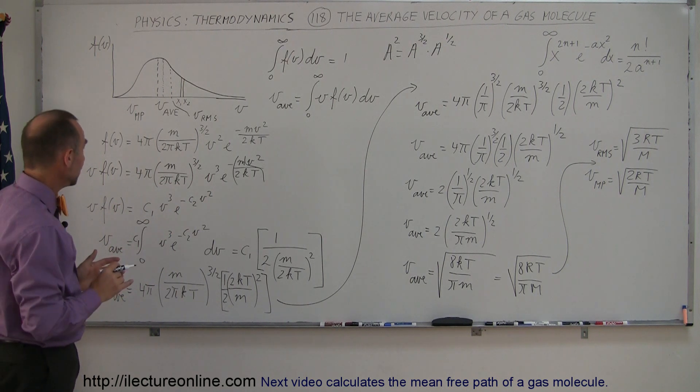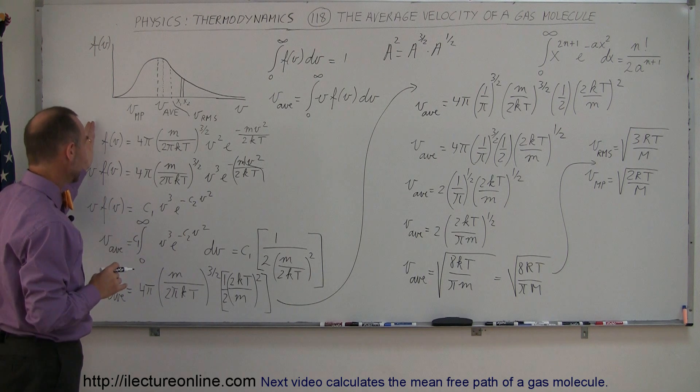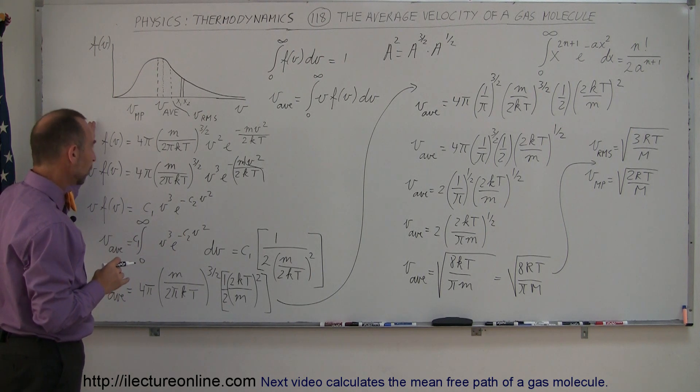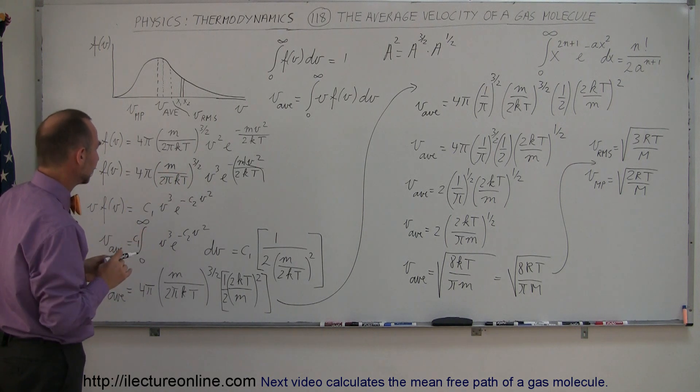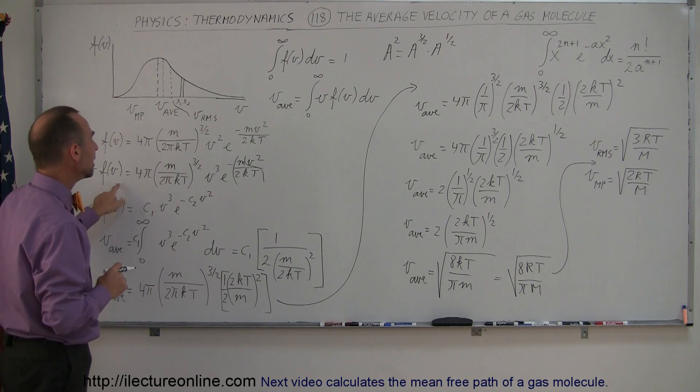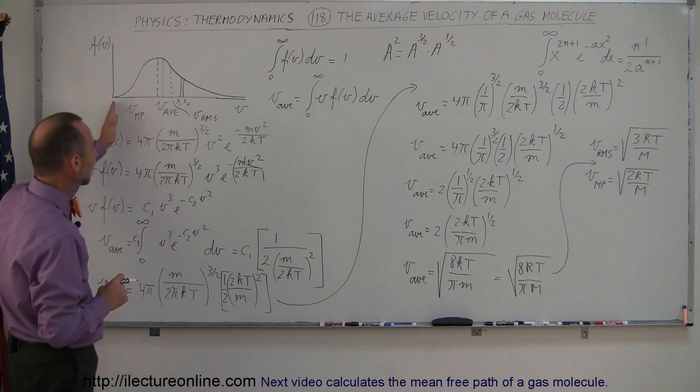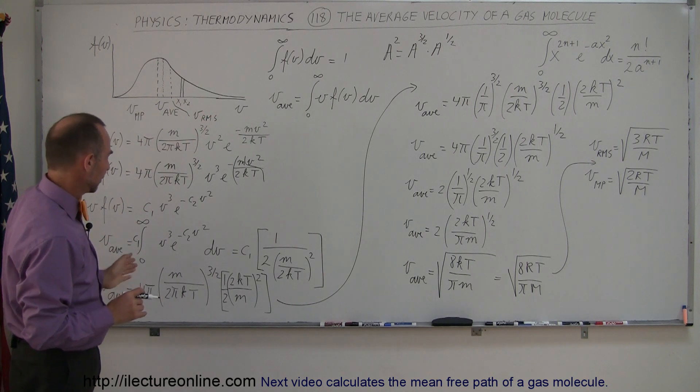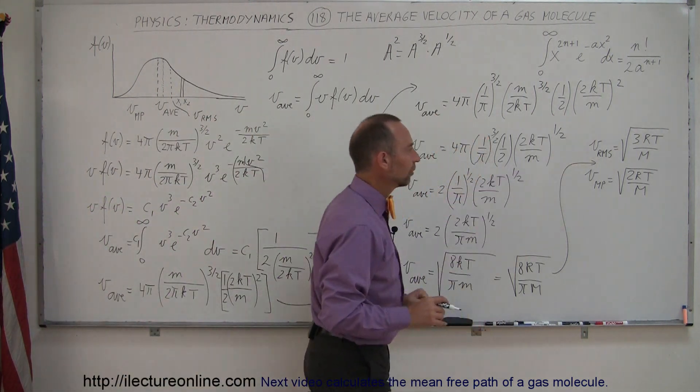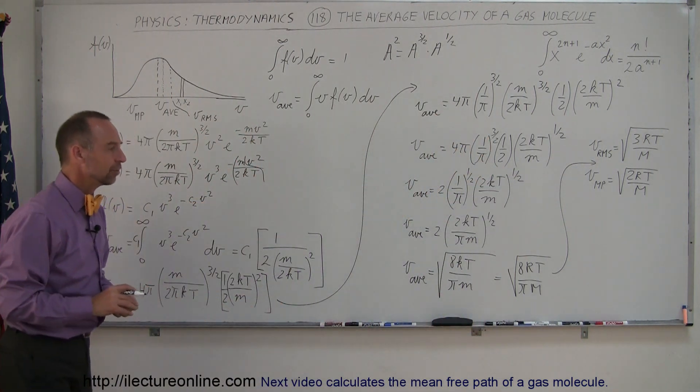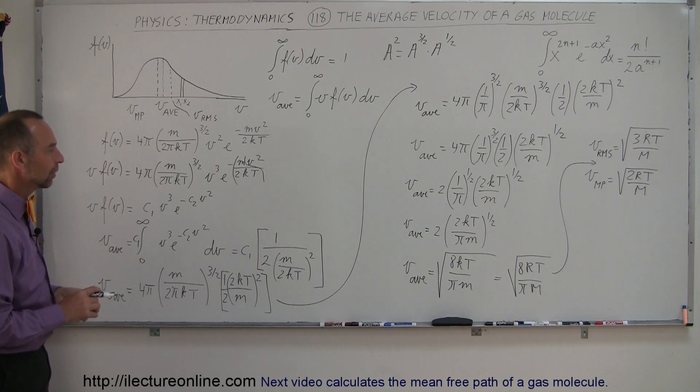And again, a quick review. We took the same Maxwell-Boltzmann equation for the gas distribution of the velocities of the molecules in a gas. We multiply it times V, we integrated it to get the average velocity. We just had to do a little bit of an algebraic trick, and then we can compare it to the two other ones to see how to find the three velocities of the molecules in a gas.